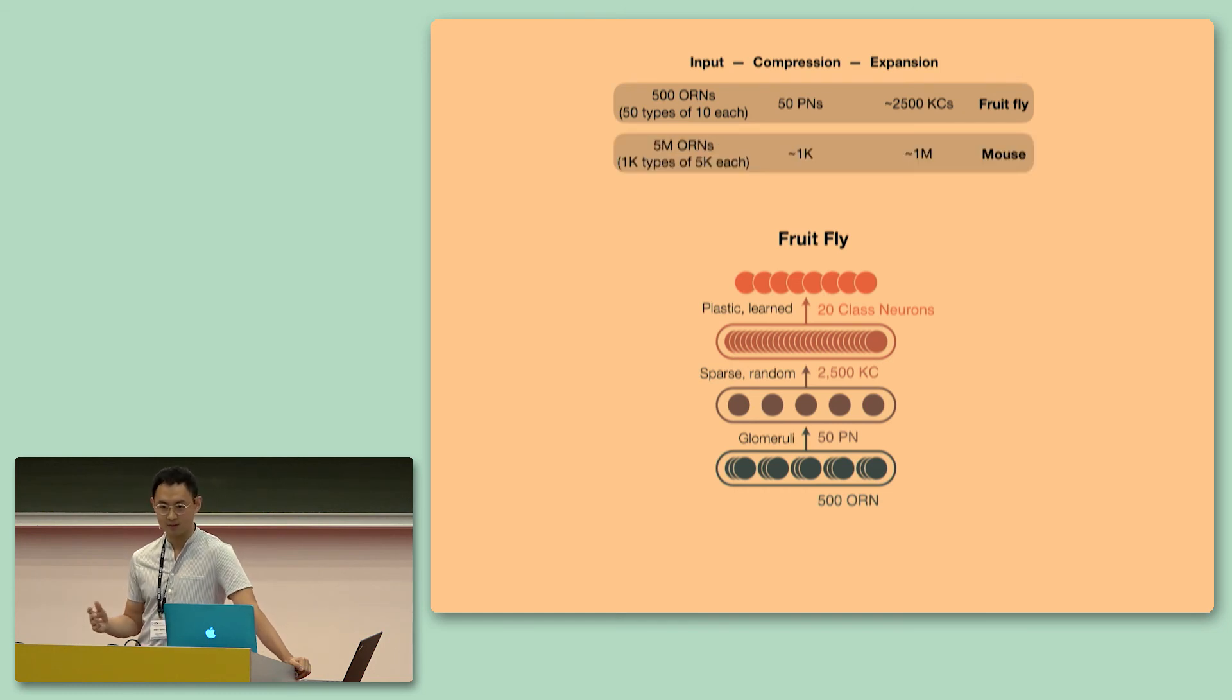And the amazing thing about the olfactory system is that the anatomic and functional organization is similar in the fruit fly and in the mouse. This is an amazing fact because these two species are separated by 600 million years of evolution and yet have evolved the same solution independently, this three-layer feed-forward system, in order to solve olfactory learning.